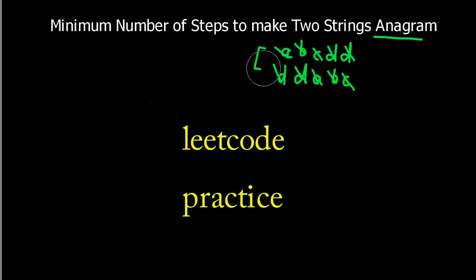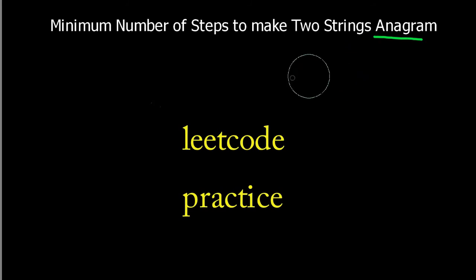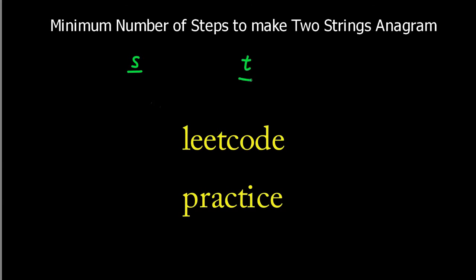In this question we are required to actually make two strings anagram if they are not, and tell how many steps were required to make two strings anagram. To do this we can replace any character of one string to another character. We are given two strings: string s and string t. We can choose any character of string t and change it to any other character. How many steps are required is what we need to return — that is our answer.